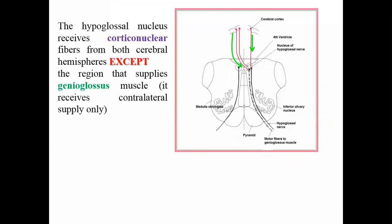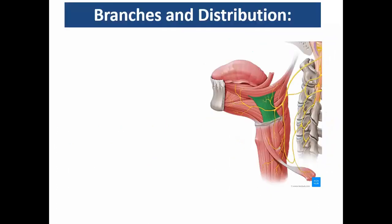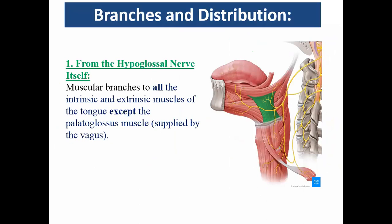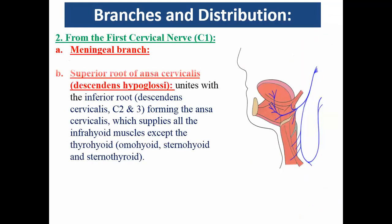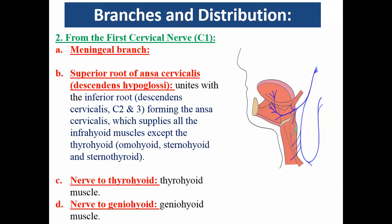The hypoglossal nucleus is controlled mainly from the contralateral side — like the facial nerve. The part controlling the genioglossus muscle receives cortical input from the opposite side only. All cranial nerve nuclei receive bilateral corticobulbar tract fibers, except the lower part of the facial nucleus and the part of the hypoglossal nucleus controlling the genioglossus muscle, which receive only contralateral input.